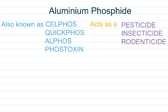Aluminium Phosphate, also known as Cellphos, Quickphos, Alphos and Phosetoxin.